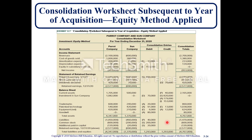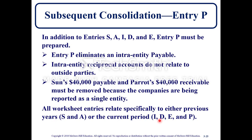This example shows how you go from parent to subsidiary consolidated entries to arrive at a consolidated total. Significantly, this example introduces entry P, which represents the payable. Entry P eliminates the intra-entity payable — inter-entity reciprocal accounts do not relate to outside parties. Sun's $40,000 payable and parent's $40,000 receivable must be removed because the companies are being reported as a single entity. All worksheet entries relate specifically to either previous years (S, A) or the current year (I, D, E, P).